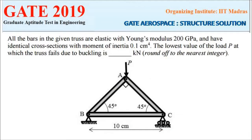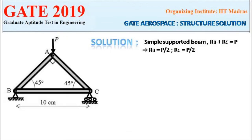Next question: all bars in the given truss are elastic with Young's modulus of 200 GPa and have identical cross sections with moment of inertia 0.1 cm⁴. We need to find the lowest value of load P at which the truss fails due to buckling, in kilo Newton rounded to the nearest integer. The truss has one simply supported end and one fixed end with a roller.